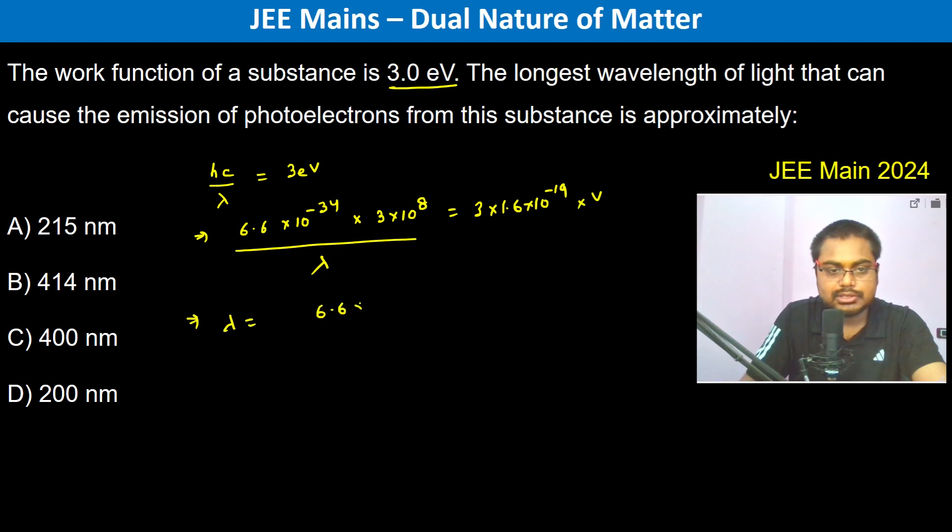is going to be 6.6 into 10 to the power minus 34 into 3 into 10 to the power 8 divided by 3 into 1.6 into 10 to the power minus 19. This gives us 10 to the power